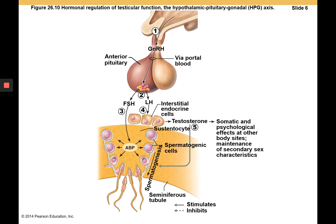Testosterone can also cause somatic and psychological effects at other body sites and maintains secondary sex characteristics. High levels of testosterone inhibit the anterior pituitary from releasing its gonadotropins and act on the hypothalamus to inhibit the release of gonadotropin-releasing hormone. Inhibin, produced by sustentocytes of the testes, can also inhibit anterior pituitary and hypothalamic action.